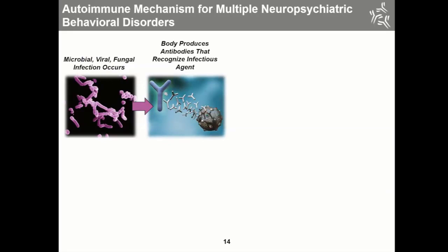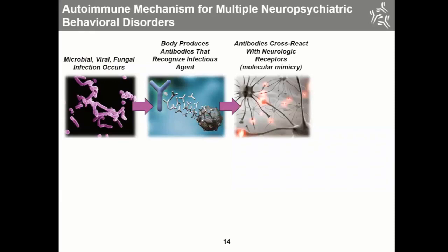These B cells are ready and available so that when the actual infectious agent occurs — whether from a chronic infection or something acute — the body can respond and make new antibodies. Unfortunately, in these individuals, the antibodies that are made cross-react with neurologic receptors.